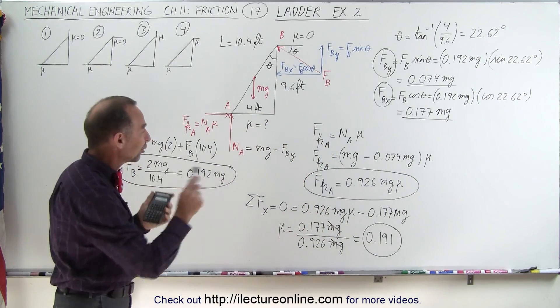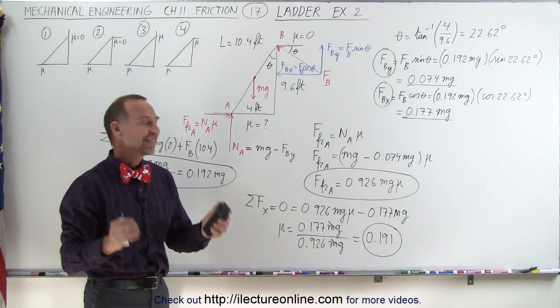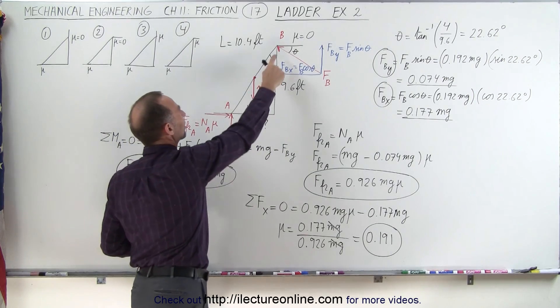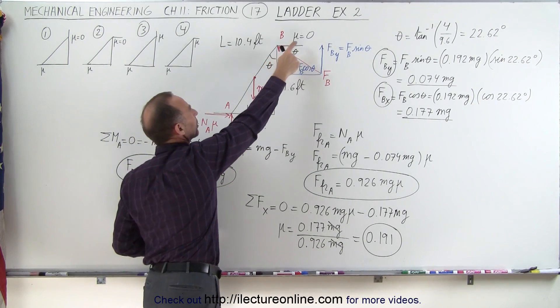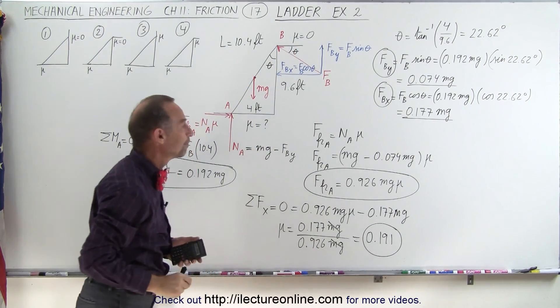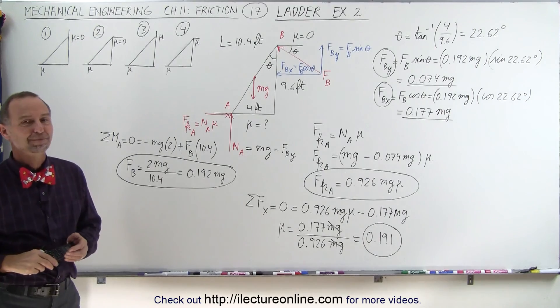That's the coefficient of friction required to keep the ladder from sliding down when it's resting at the corner, where mu equals 0.191. And that's how it's done.